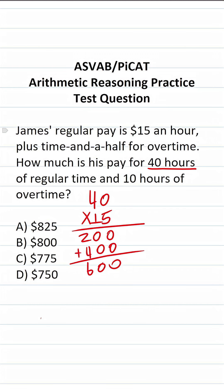Now, for overtime, he earns time and a half. So we're going to take his hourly rate of $15 an hour, and we're going to multiply that by 1.5, that is time and a half.